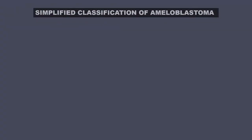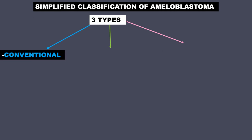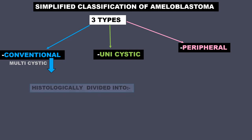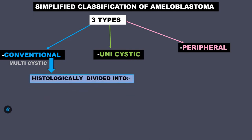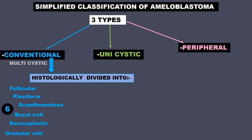This is a simplified classification of ameloblastoma — please follow the classification taught to you. There are three types: conventional, unicystic, and peripheral. Conventional is also called multicystic. Histologically, it can be divided into six subtypes: follicular, plexiform, acanthomatous, basal cell, desmoplastic, and granular cell.